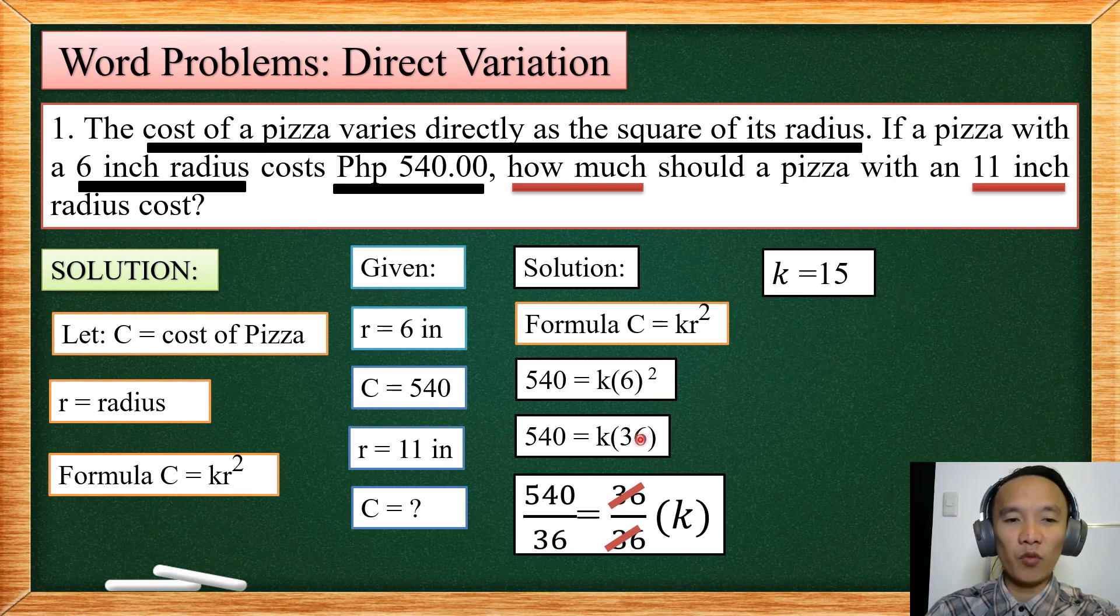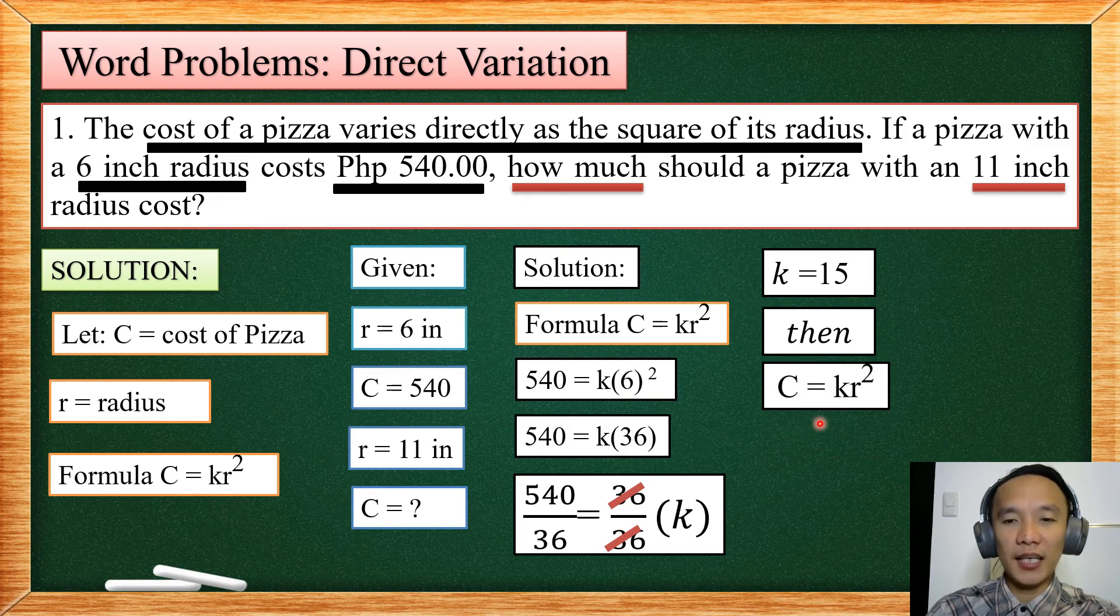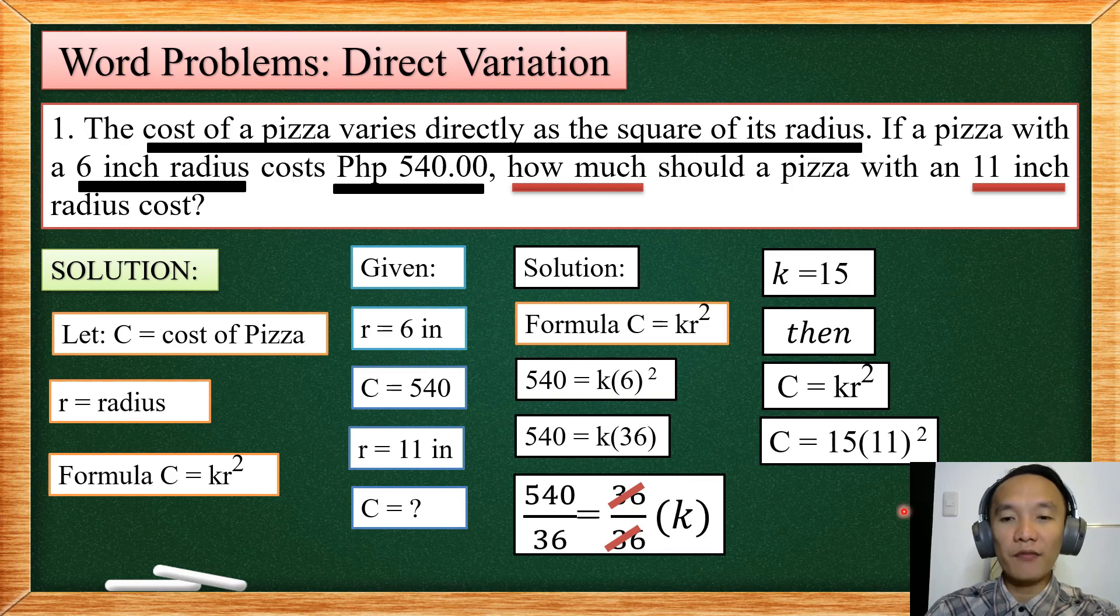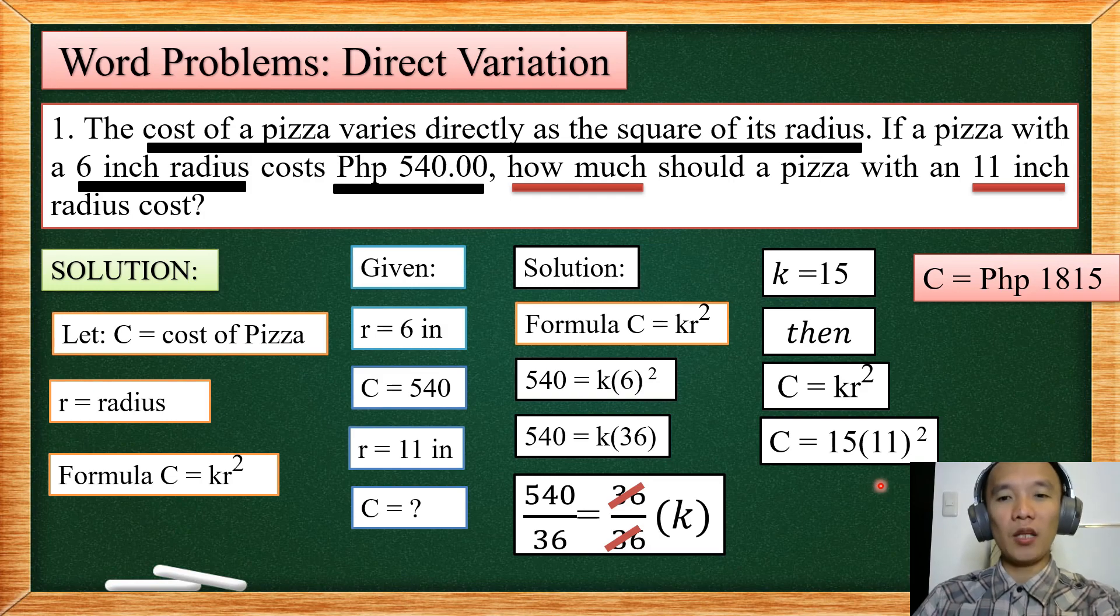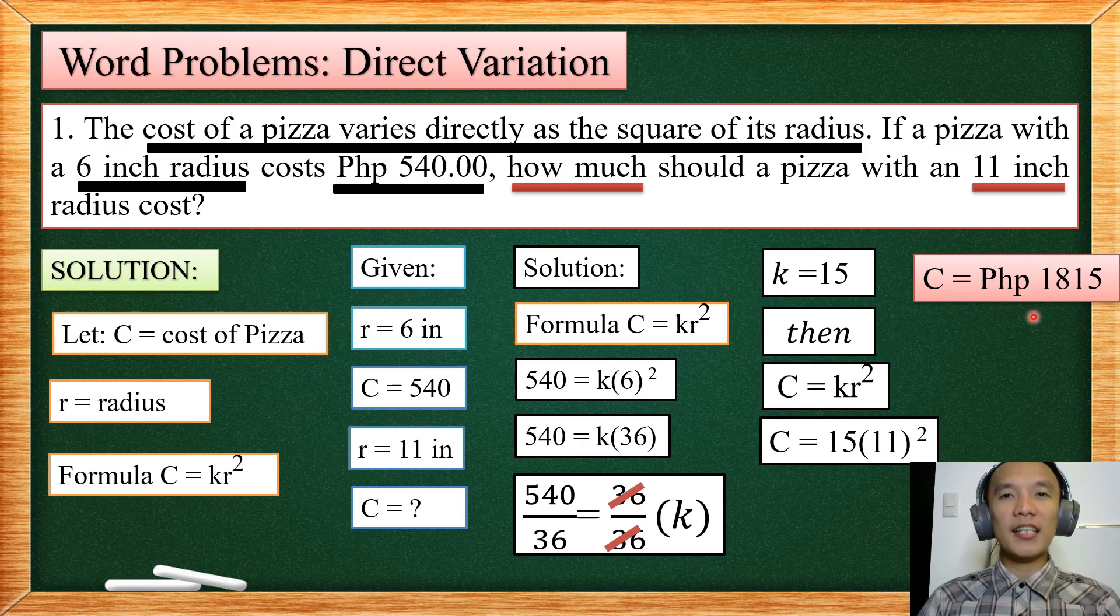So this 15, we are going to use in our formula. So we will have C equals to K R squared. So we will have 15 times 11 because the new radius is 11. 11 times 11 will be 121 times 15. So the answer is 1,815 pesos for an 11 inch pizza.